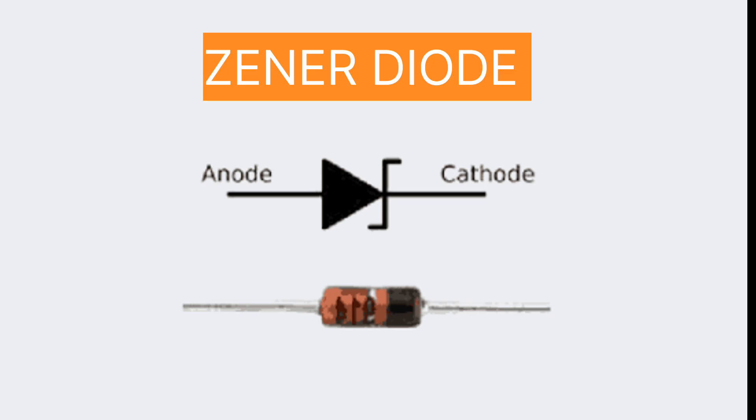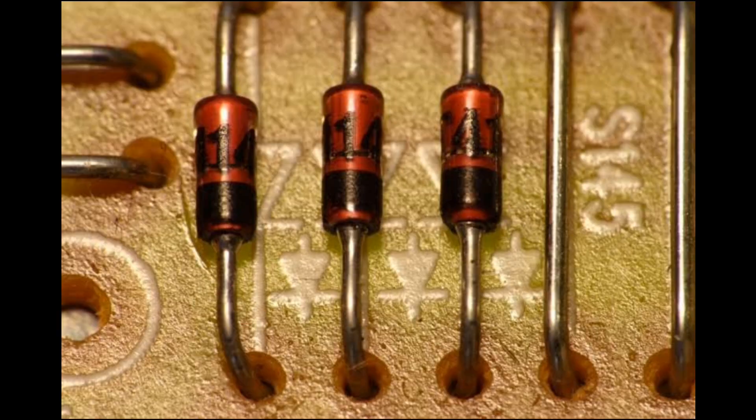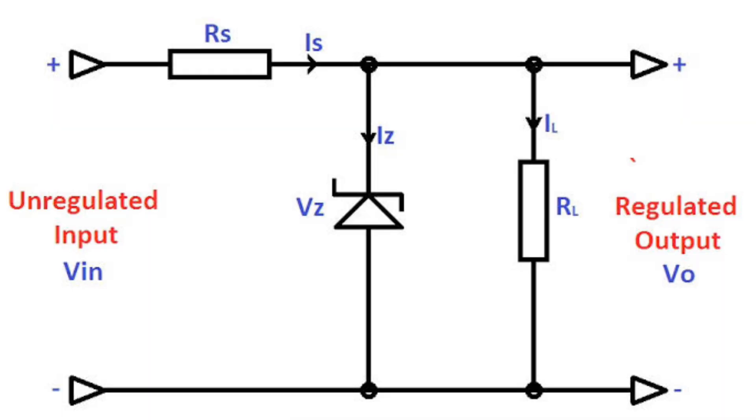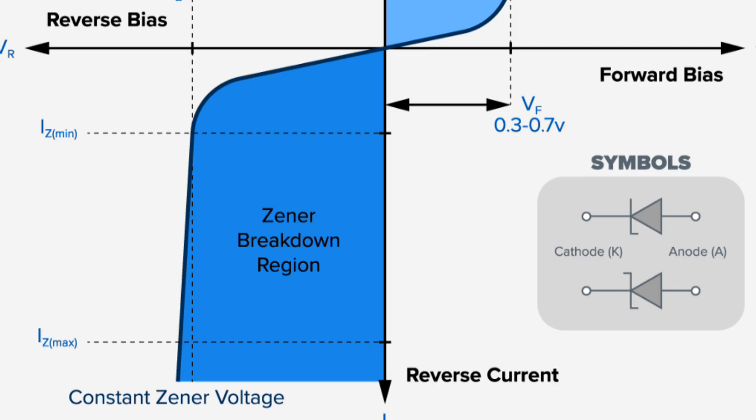Next we have zener diode. Zener diode works in reverse bias mode only. Once it reaches the breakdown voltage, even if you increase the input voltage, the output voltage doesn't change. It maintains a constant voltage at its output after the breakdown. Because of this property, it can be used as a constant voltage source in many applications.